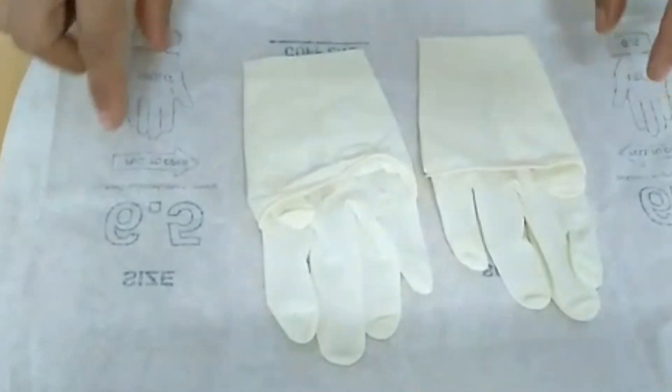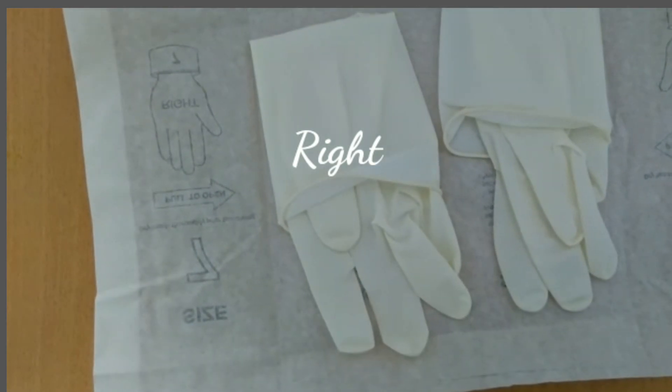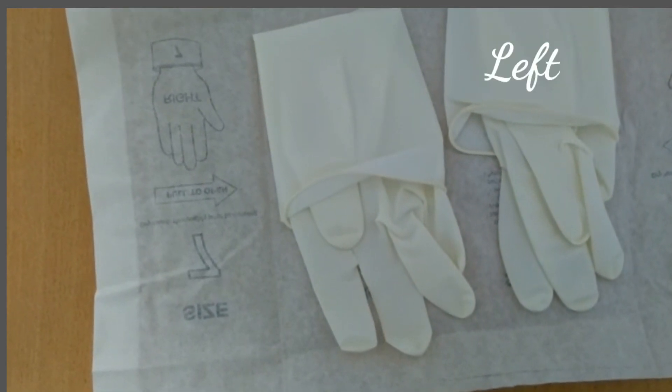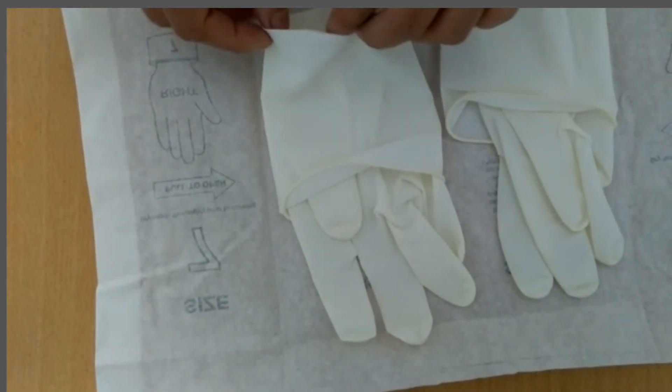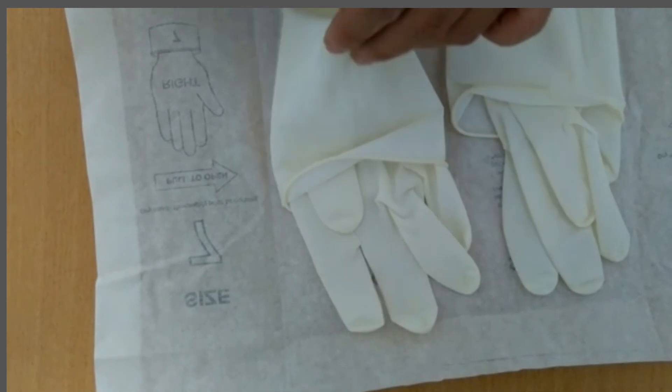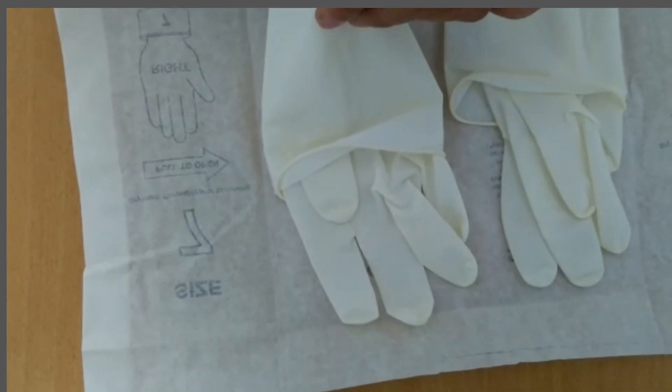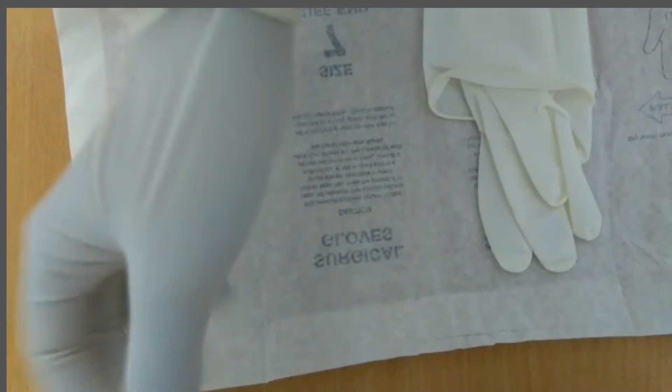Start with your dominant hand. If you're right-handed, start with your right hand, and if you're left-handed, start with your left hand. Pick up one sterile glove by the roll cuff, taking care not to touch the outside of the glove. Slide your right hand into the glove, holding the glove by the inside of the roll cuff as you pull it onto your hand.